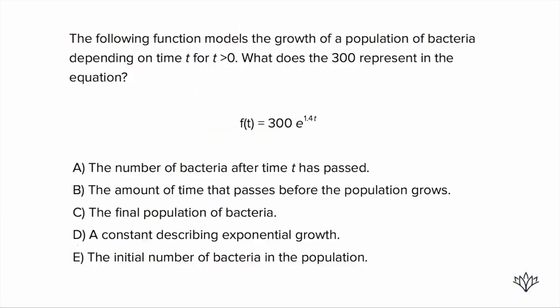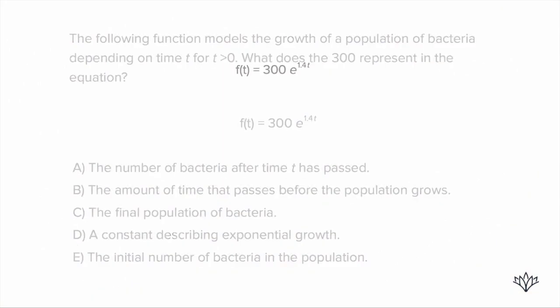It says f of t equals 300 times e to the 1.4 t. This is an exponential growth function, guys. We don't need to get into too much detail about that right now. But here's the thing, even if you were completely confused on what this equation represents and what these numbers represent, here's what you could do. Start with time equals zero and see what happens. If you start with time equals zero, you'll be able to figure out what that 300 represents.